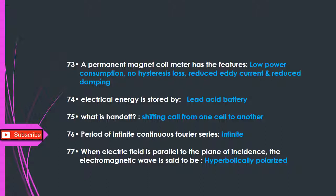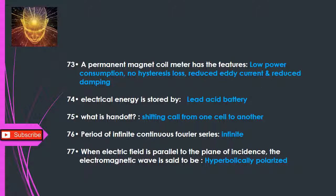Q73: A permanent magnet moving coil meter has the features of low power consumption, no hysteresis loss, reduced eddy current, and reduced damping. Q74: Electrical energy is stored by — lead acid battery. Q75: Handoff is the shifting of a call from one cell to another. Q76: Period of an infinite continuous Fourier series — infinite. Q77: When the electric field is parallel to the plane of incidence, the electromagnetic wave is said to be — horizontally polarized.